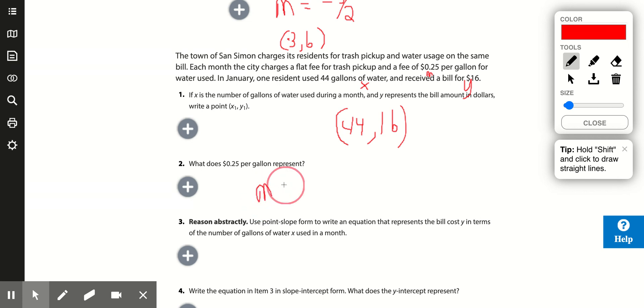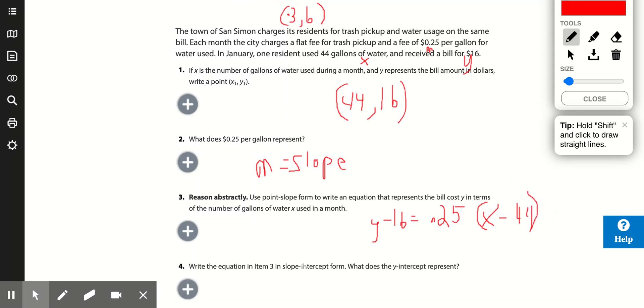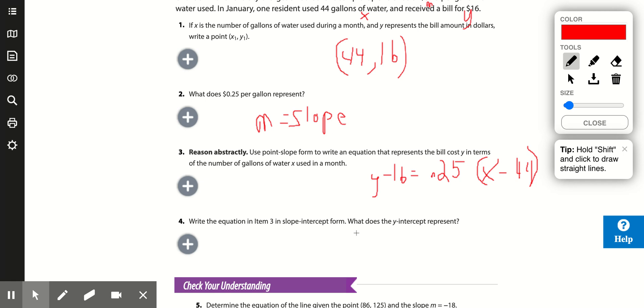If x is the number of gallons used during the month, 44, and y represents the bill amount in dollars, charge of 16 dollars, there's the point as written: 44, 16. What is 0.25? That's our slope. Now we can write that in point-slope form. This is just a word problem and we've already done most of it. Point-slope form: y minus y₁, 16, equals 0.25, our slope, times x minus x₁, x minus 44.